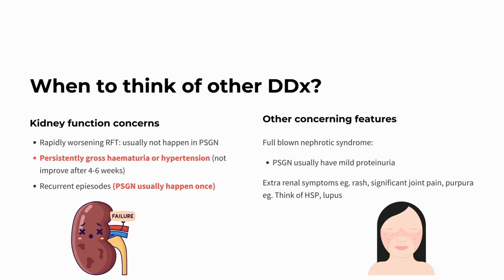If the patient has other concerning features such as full nephrotic syndrome, think about other differentials — in PSGN, there is usually only mild proteinuria. If they have extra-renal symptoms suggestive of other diagnoses, such as malar rash, significant joint pain or arthritis, or purpura, think about other differentials like systemic lupus or HSP, which we call IgA vasculitis.